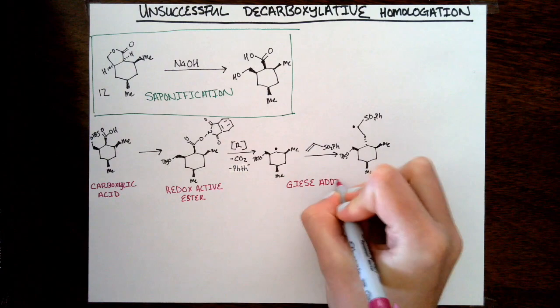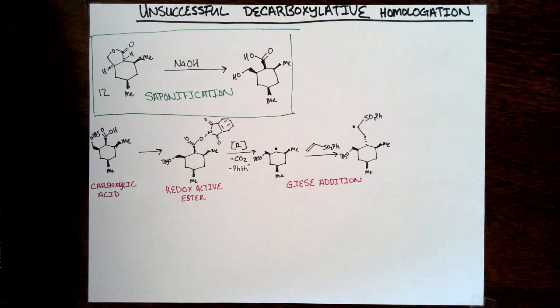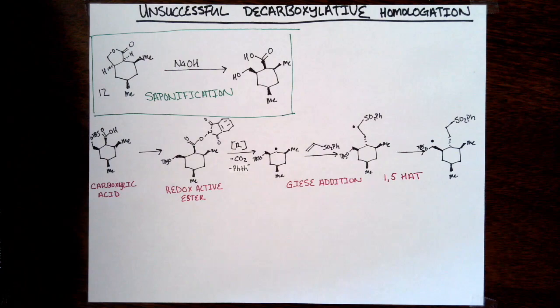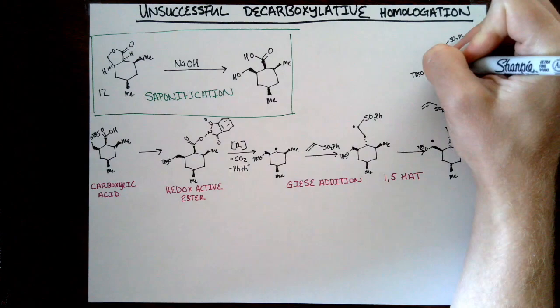After it's reduced, it will decarboxylate and you'll get to a carbon-centered radical that can then add to an electron-deficient alkene. In this case, that's phenyl vinyl sulfone. This is known as a Giese reaction. What they noticed is that the decarboxylation worked well and the addition worked well, but the corresponding radical did a 1,5-HAT with the alcohol to get to an alpha-oxy radical.